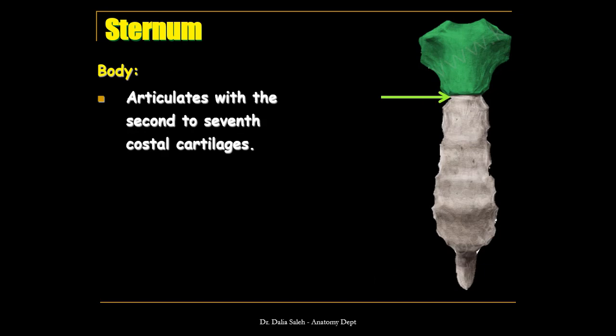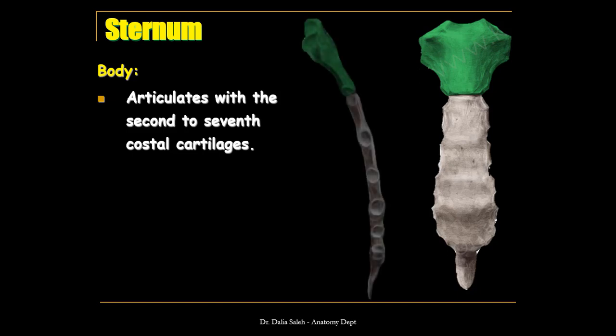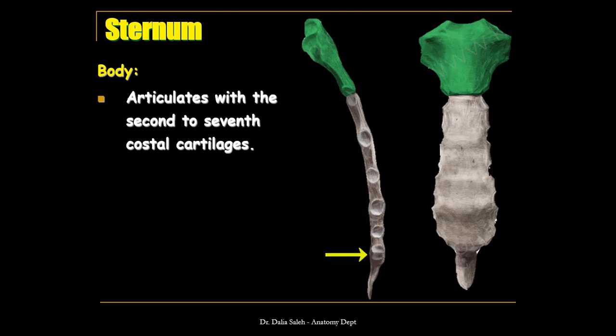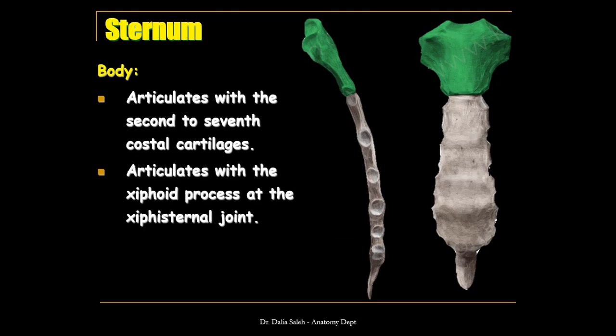The body of the sternum articulates with the costal cartilages from the second to the seventh. At the sternal angle you have the second costal cartilage, then the third, fourth, fifth, sixth, and at the xiphisternal junction you have the seventh costal cartilage. The body also articulates below with the xiphoid process at a joint called the xiphisternal joint.